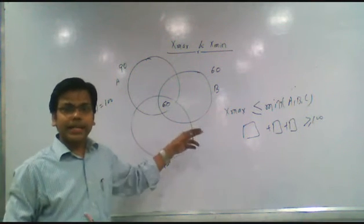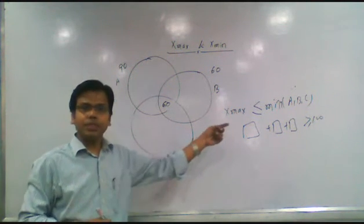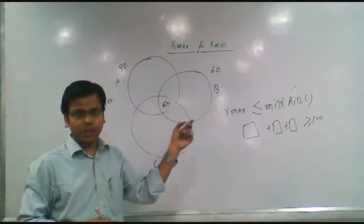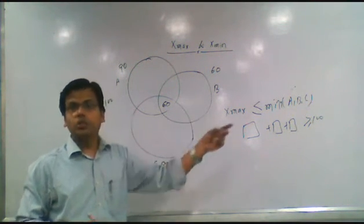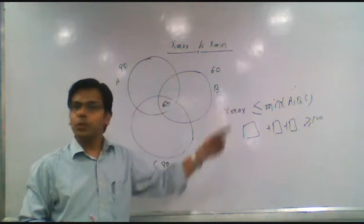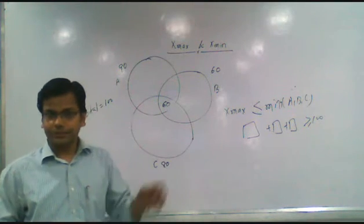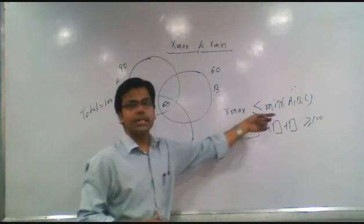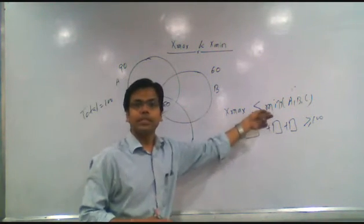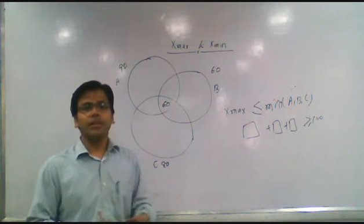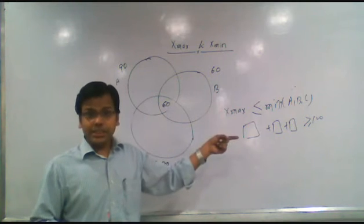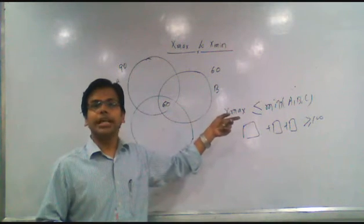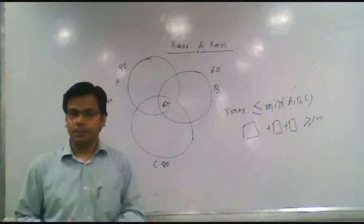Then apply the second condition: the sum of the three values — considering only values outside the intersection — should be greater than or equal to 100. If this condition is satisfied, then x maxima equals the minimum of A, B, C. If this condition is not satisfied, then we need to adjust x maxima.